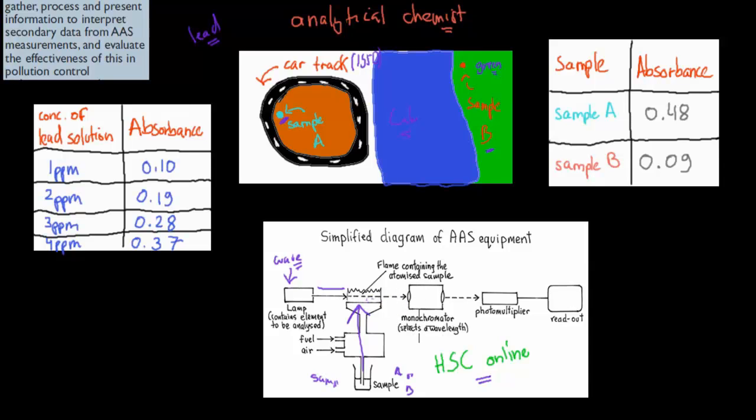This light will go through the monochromator which selects one of the wavelengths, let's say it selects wavelength 417 which is used to detect certain types of elements. Then it goes through the photomultiplier and the last thing you get is a readout. So this is your actual absorbance. Sample A we get a readout of 0.48, and sample B we get a readout of 0.09.